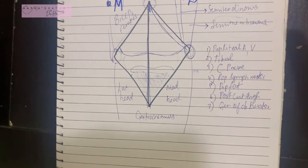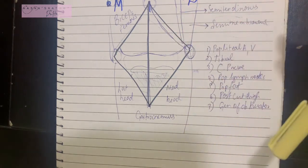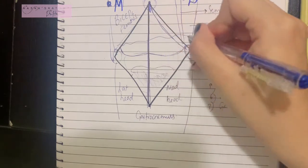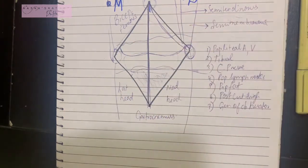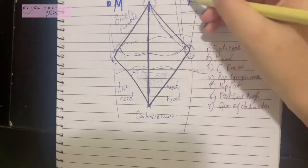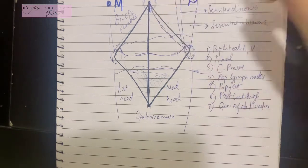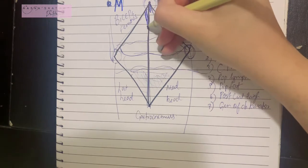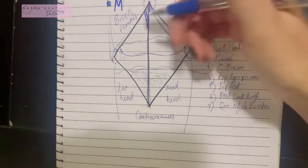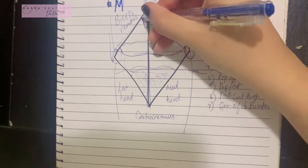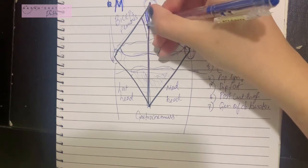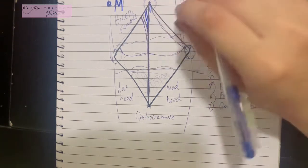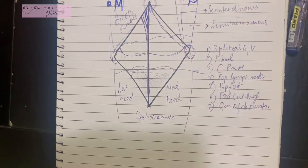Now for the medial-to-lateral relationships, let's divide the fossa into three parts: upper, middle, and lower. In the upper part, the most lateral structure is the tibial nerve, coming more medially is the popliteal vein, and the most medial structure is the popliteal artery — which is also the deepest. However, this arrangement only applies to the upper part of the fossa.